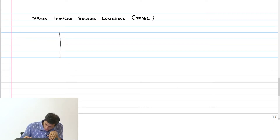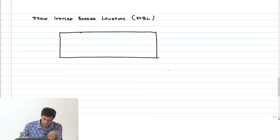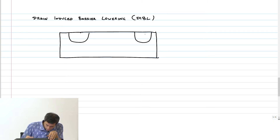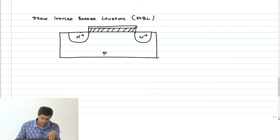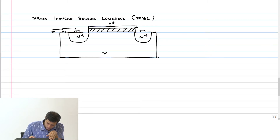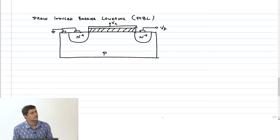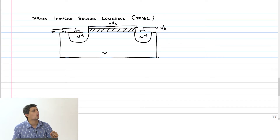Let us look at this N+ N+ P structure with source, drain, body grounding, V_G and V_D. In a long channel device, if I change my drain voltage from say 50 millivolt or 0.1 V_DD to V_DD, for some technology where a V_DD is given.